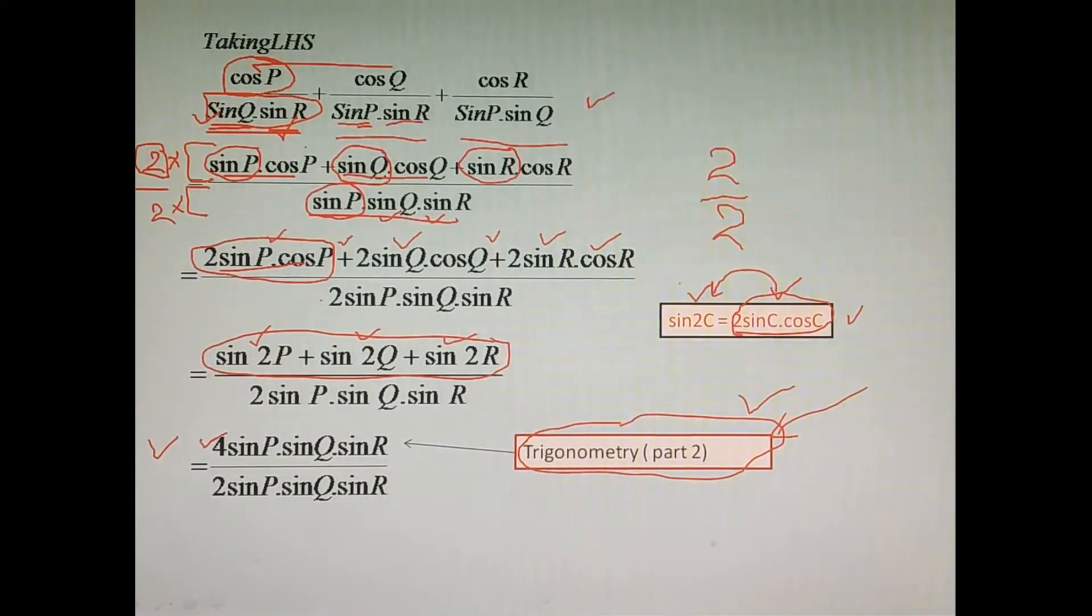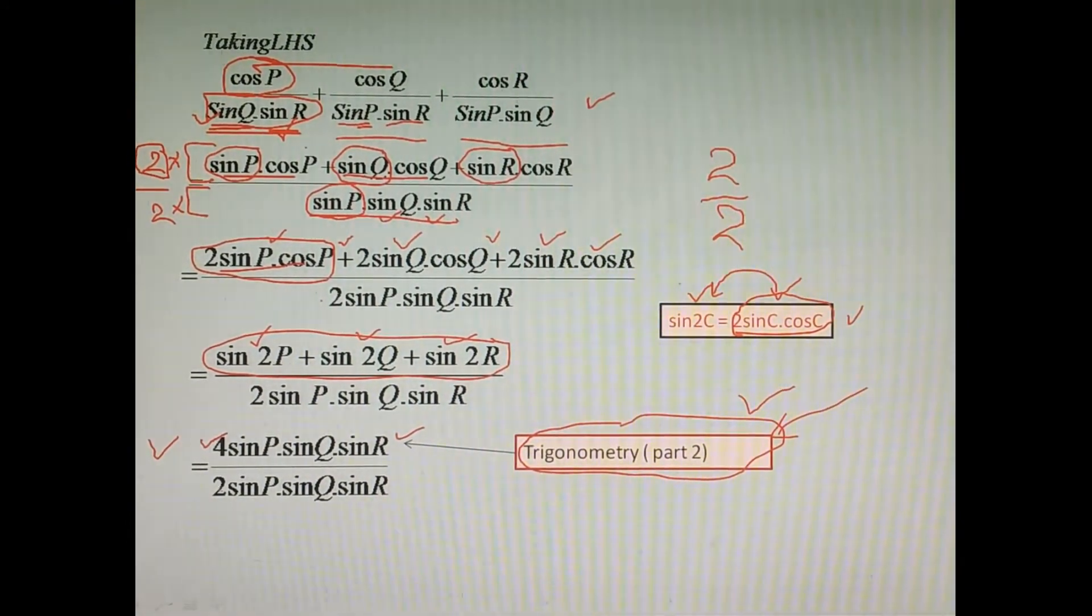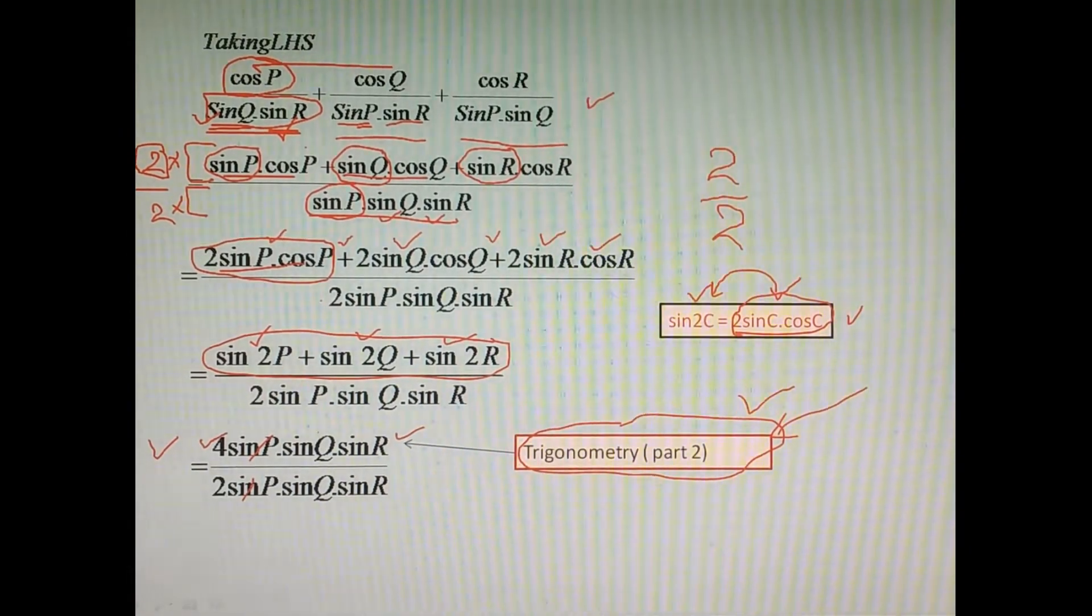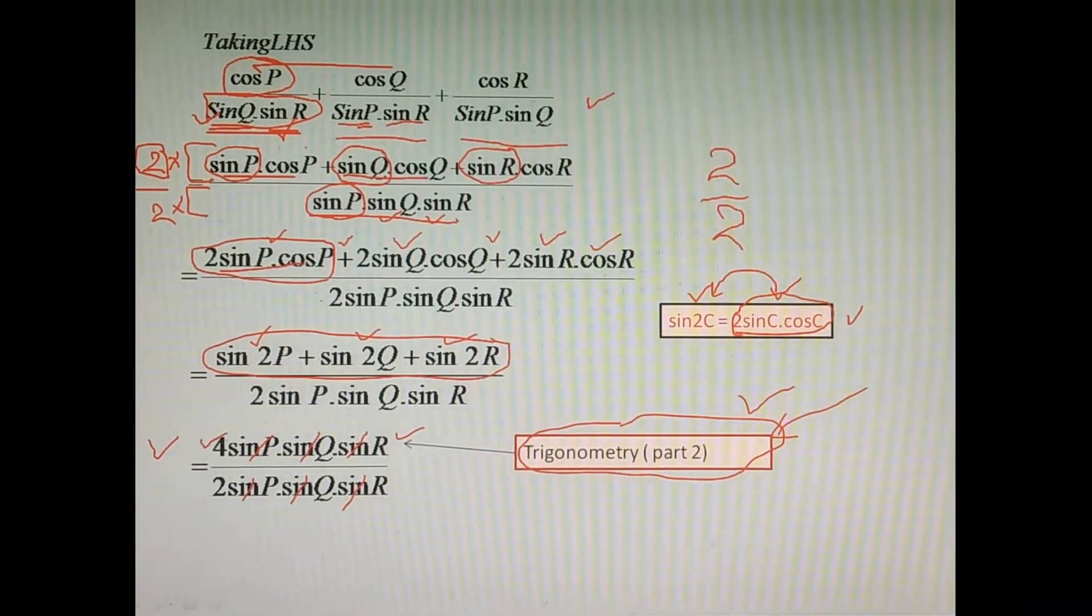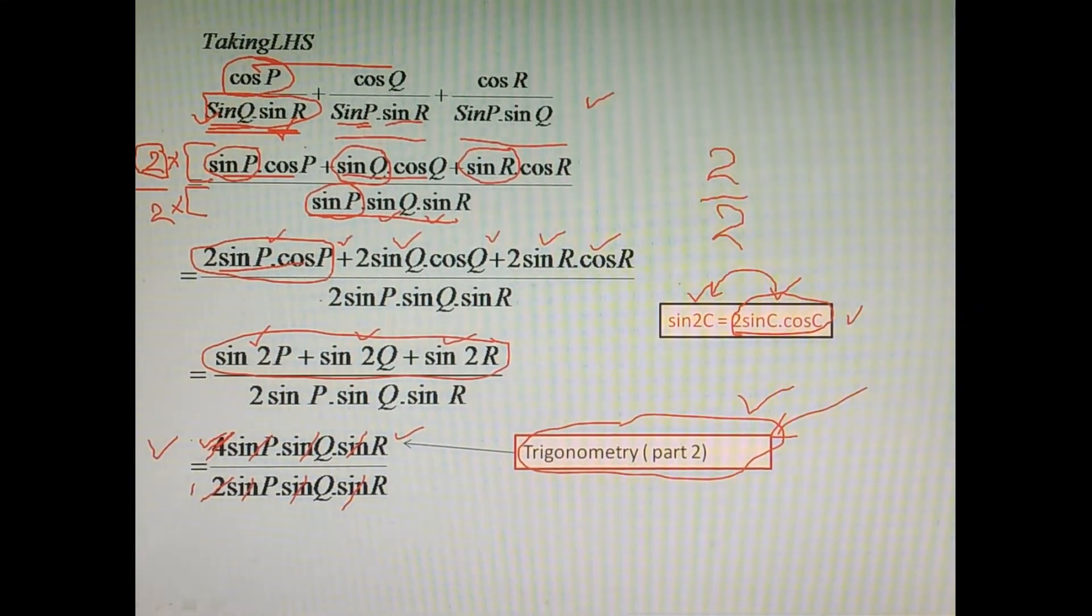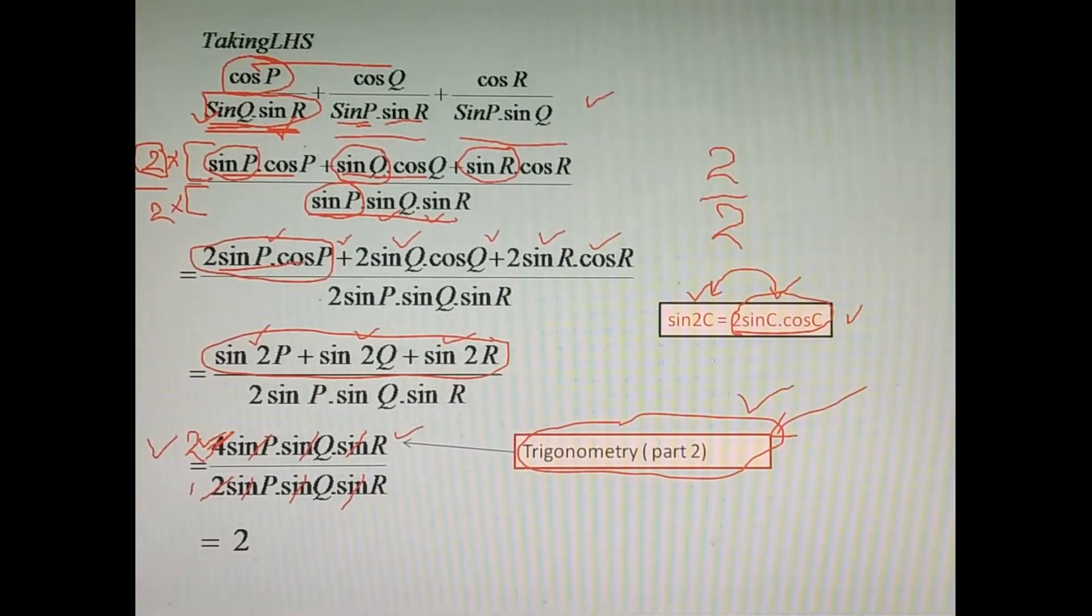And now this 2 sine P into sine Q into sine R, this is the same that we have copied from the above step. Now sine P and sine P is common, sine Q sine Q common, and sine R sine R common, so they can be cancelled. And then again, we can take common between these numbers 4 and 2. They have the same common number that is 2. So we can divide this 2 by 2, that will be 1. This 4 by 2, that will be 2. So finally we'll get 2 as our answer, which is the right-hand side that we need in this question.